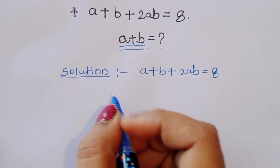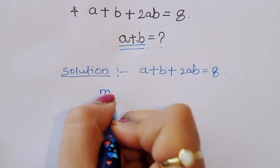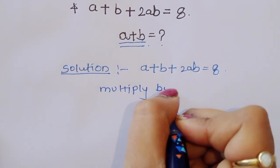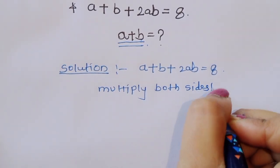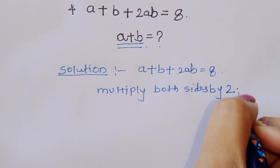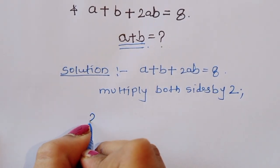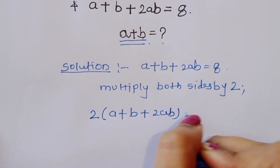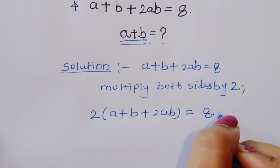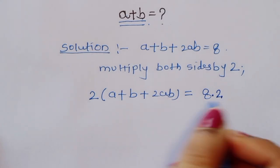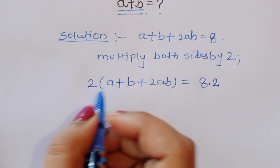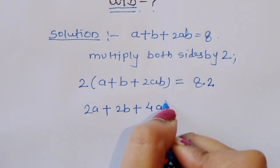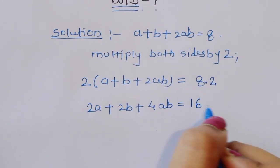Now we can multiply both sides by 2. Then we will get 2a plus 2b plus 4ab is equal to 16.